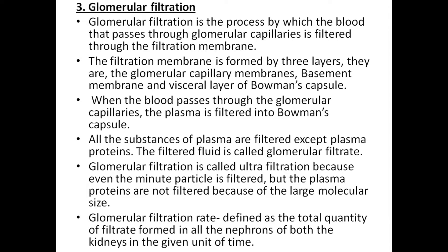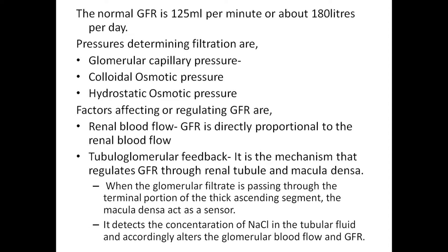Glomerular filtration is called ultrafiltration because even minute particles are filtered, but plasma proteins are not filtered because of their large molecular size. Glomerular filtration rate (GFR) is defined as the total quantity of filtrate formed in all nephrons of both kidneys at a given unit of time. The normal GFR is 125 ml per minute or about 180 liters per day. The pressures determining glomerular filtration are glomerular capillary pressure, colloid osmotic pressure, and hydrostatic pressure.